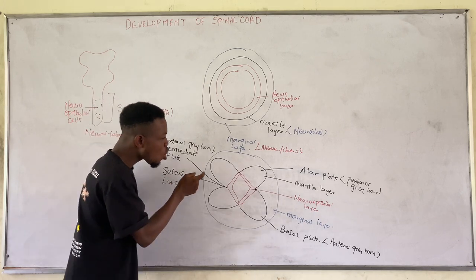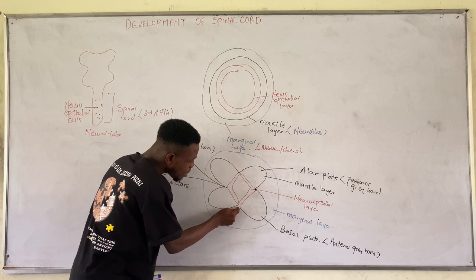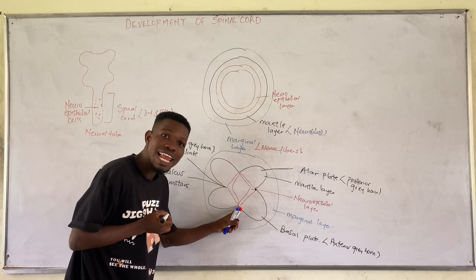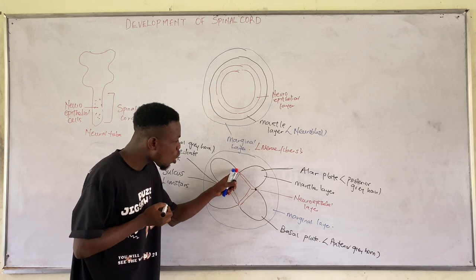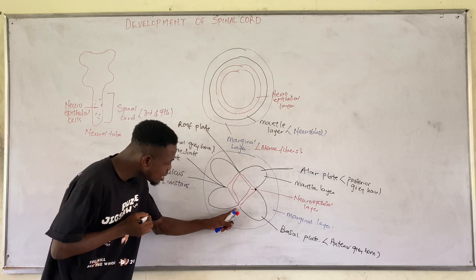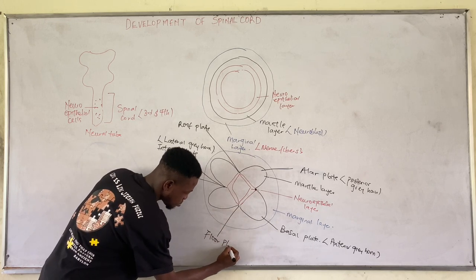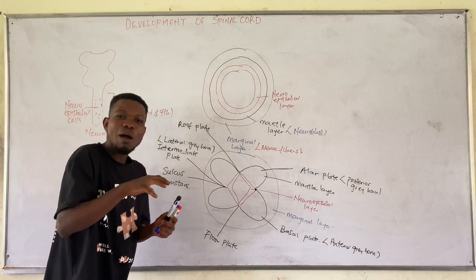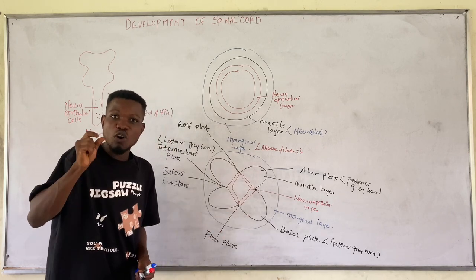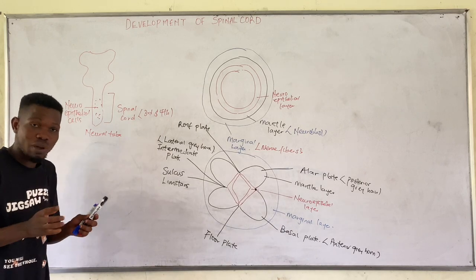There is a particular area at the dorsal midline and the ventral midline of the mantle layer that is devoid of neuroblasts. At the dorsal midline of the alar plate there is a particular area which we call the roof plate, while at the ventral midline of the basal plate there is a particular area devoid of neuroblasts which we call the floor plate. These plates serve as potential pathways for nerve fibers crossing from one side to another.